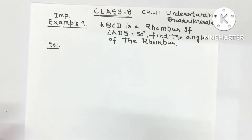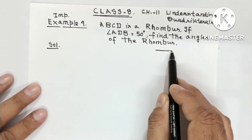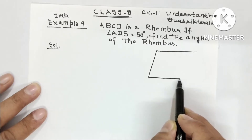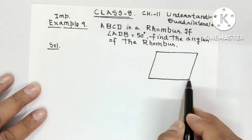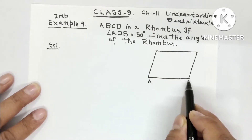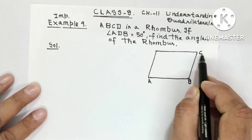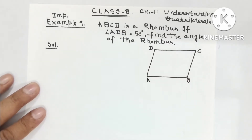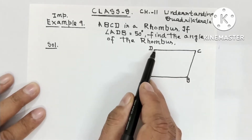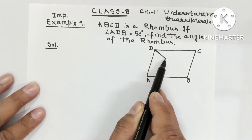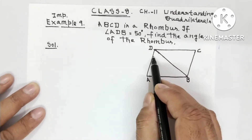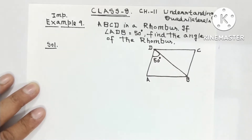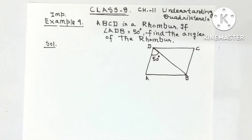ABCD is a rhombus. A rhombus is a parallelogram. In this rhombus, angle ADB — you need to join this diagonal — angle ADB is 50 degrees. We need to find all the angles of the rhombus.